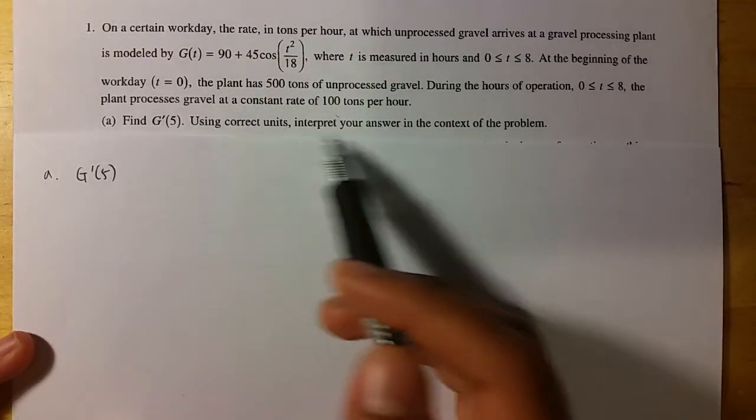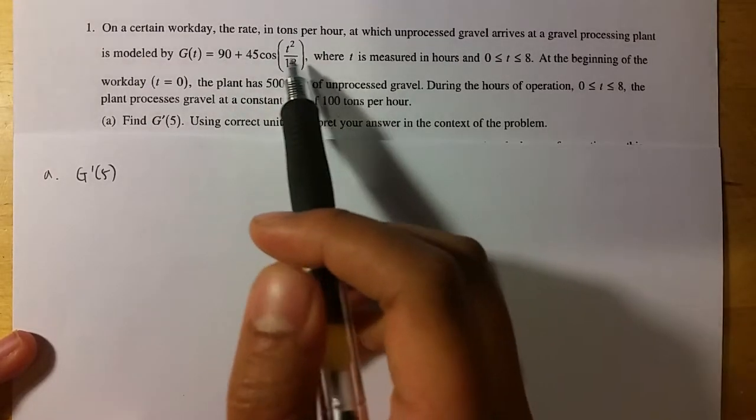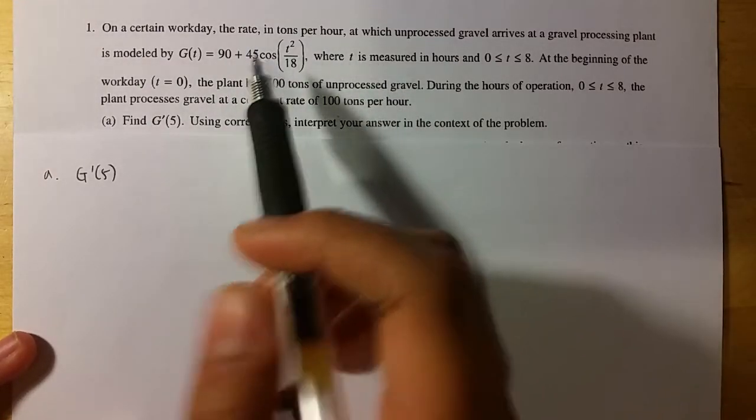The first question is finding g prime of 5 and interpreting your answer. So g, the function g, is the rate at which gravel is arriving.